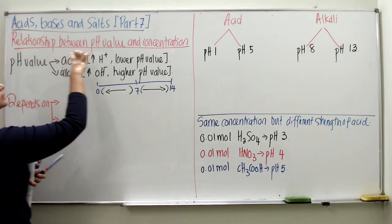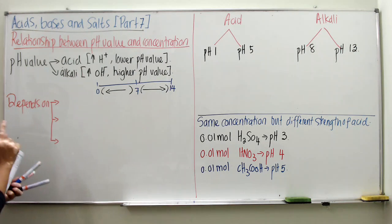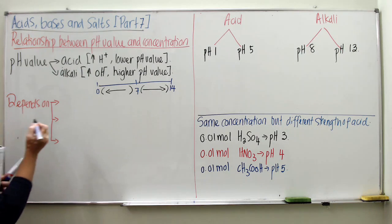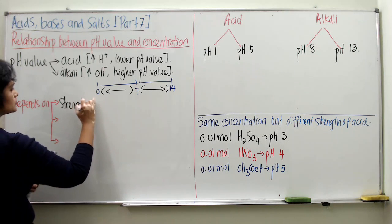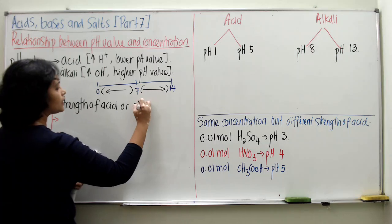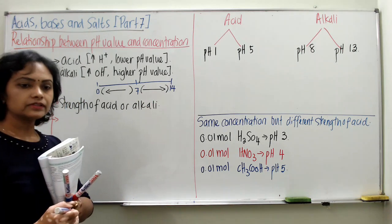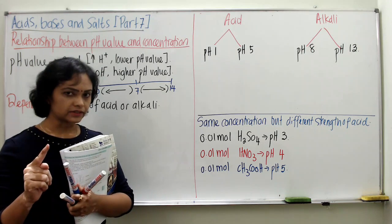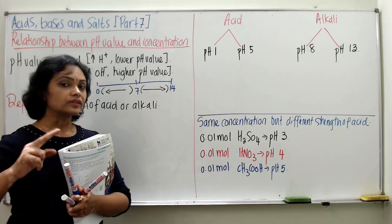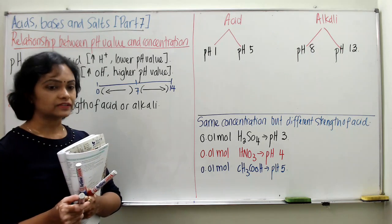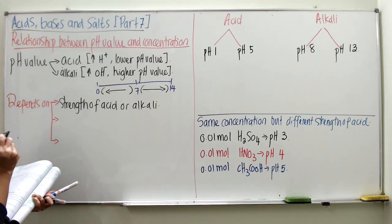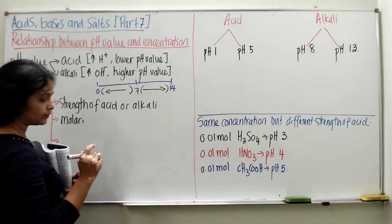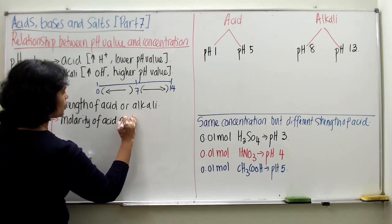pH value depends on what? So pH value depends on three factors. First is the strength of acid or alkali. For instance, ethanoic acid versus sulfuric acid — ethanoic acid is a weak acid, sulfuric acid is a stronger acid, so the pH value might differ. Second factor depends on the molarity, which is concentration, which I have already taught you how to calculate.